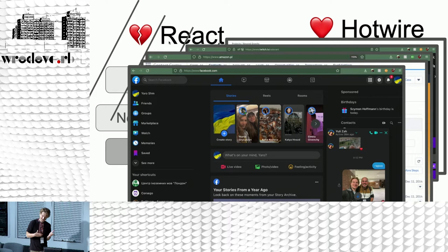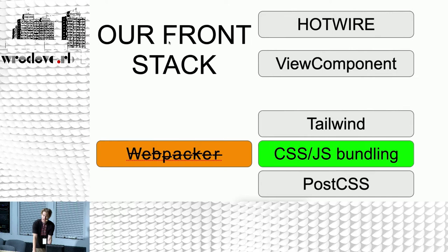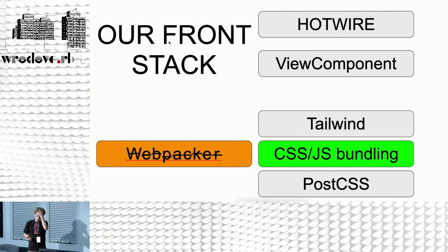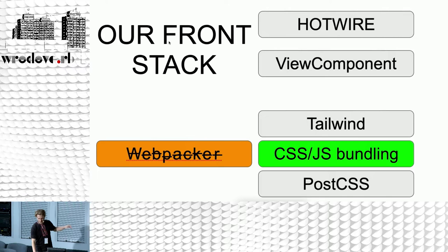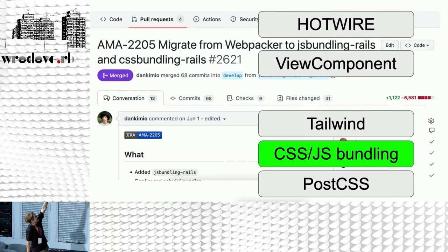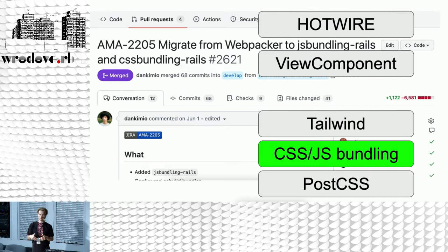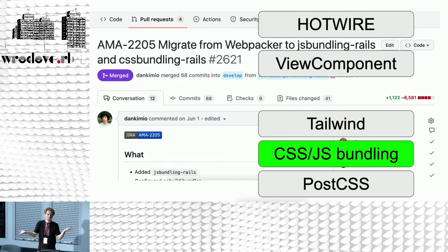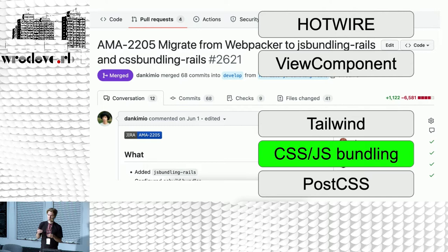Coming back to the company where I work and our stack: on the frontend we've got Hotwire, View Component, and Tailwind. Just recently we moved away from Webpacker to CSS and JS Bundling — and this is maybe my favorite PR merged in the last year. The build time decreased from around 40 seconds to maybe five. You don't even notice it anymore. It really made the developer experience much better. It wasn't an easy migration and it took some time, but it was 100% worth it.